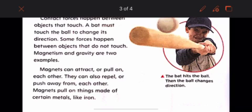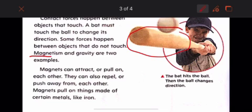Contact forces happen between objects that touch. A bat must touch the ball to change its direction. Some forces happen between objects that do not touch. Magnetism and gravity are two examples of forces that do not touch.